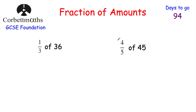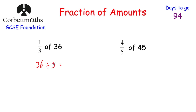It's important to be able to work out fractions of amounts. We've got questions: work out a third of 36 and four fifths of 45. To find a third of 36, you just divide by three. So 36 divided by three is equal to 12. A third of 36 is equal to 12.